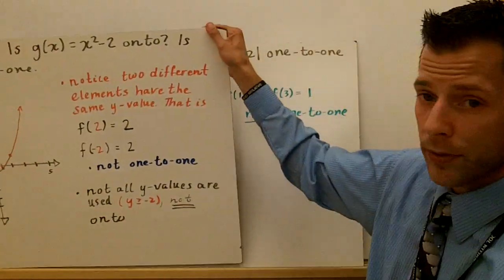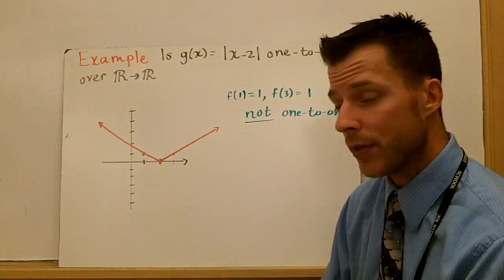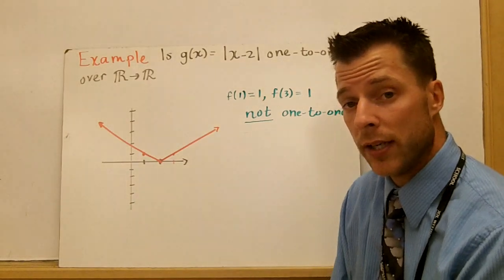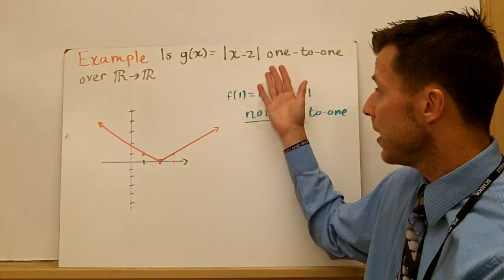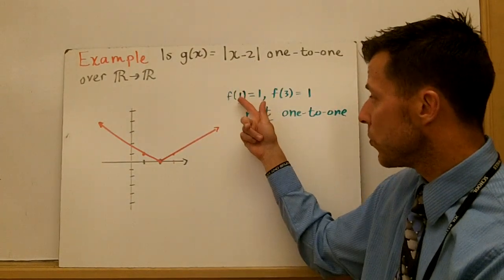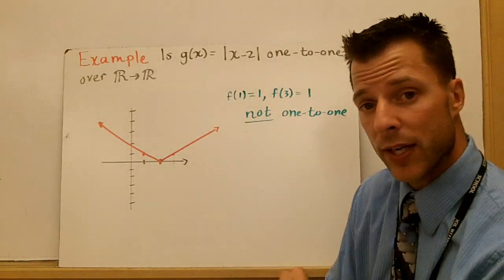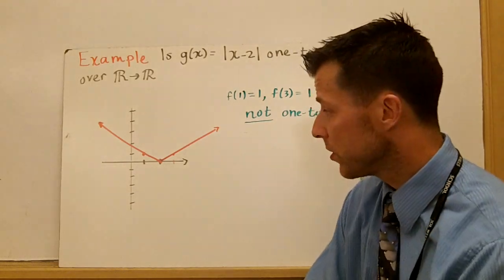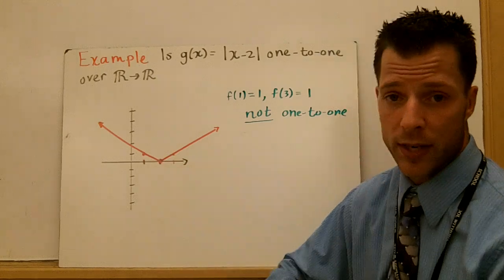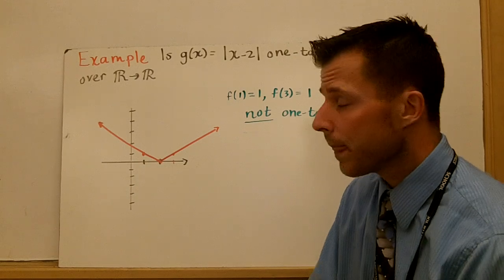So let's look at one more example of an absolute value. Absolute value has that v-shape just like the parabola. So you can say, well, it's v-shaped similar to a parabola, so then it's not going to be one-to-one. And if you said that, you're right. This function, is it one-to-one over the real numbers? It's not. Because notice, one and three, two different x's, get paired with the same y value. And that can't happen in a one-to-one function. This function, again, is also not onto because all the y values are not being used. It's only from zero to infinity. So all the y values don't work.